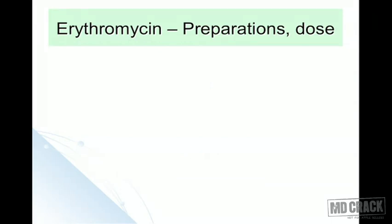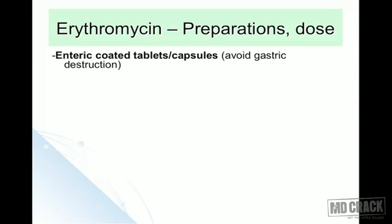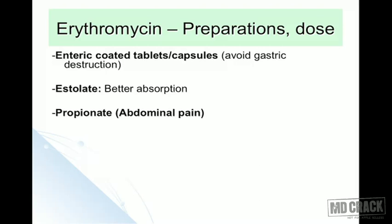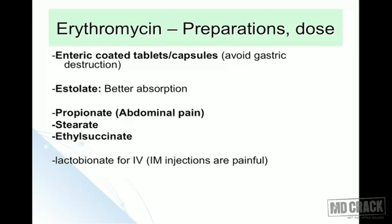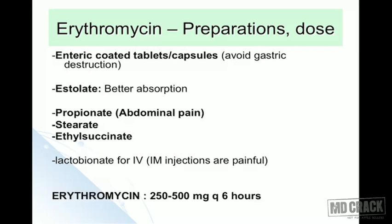Regarding preparations and doses, erythromycin is available as enteric-coated tablets or capsules to avoid destruction by gastric hydrochloric acid. The estolate salt is well absorbed; propionate produces abdominal pain. Other salts include stearate and ethylsuccinate. Lactobionate is available for intravenous use; intramuscular injections are painful. The dose is 250–500 mg every six hours.